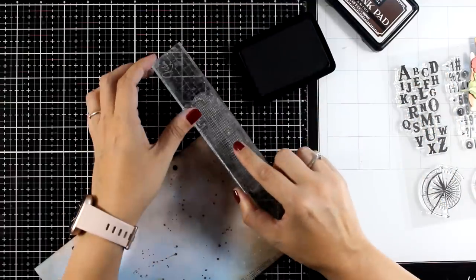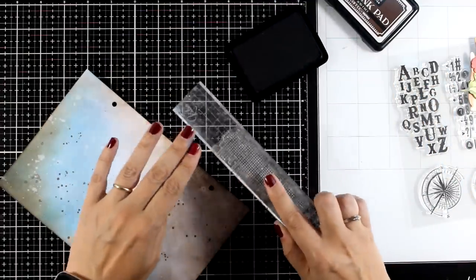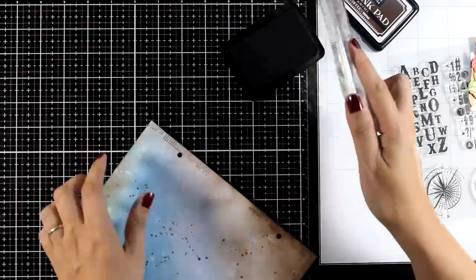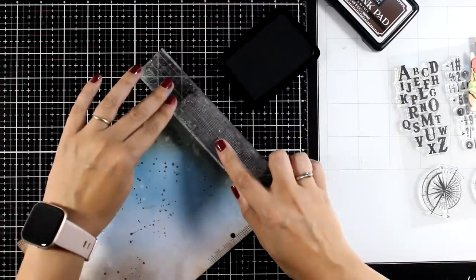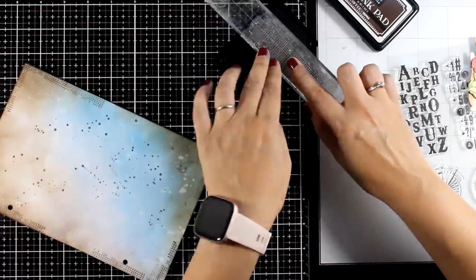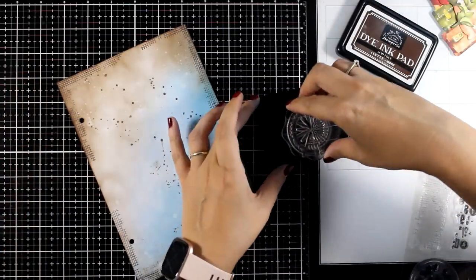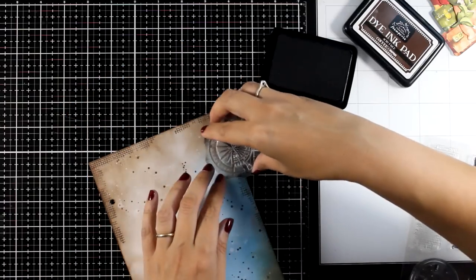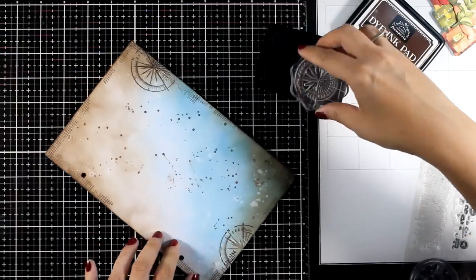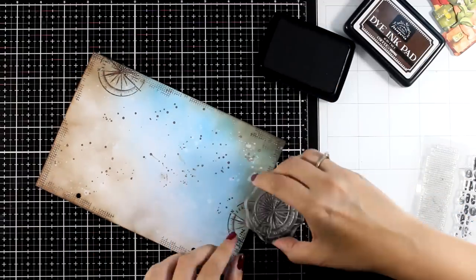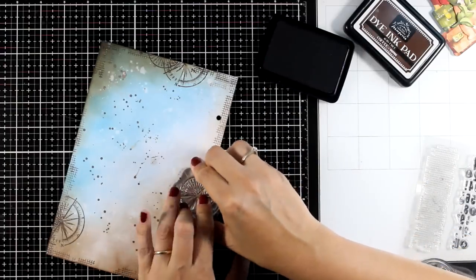For stamping the border I went with coffee dye ink but you can definitely use the black one for a more vibrant border. Also notice that I'm not trying to make this perfect. I deliberately leave areas without stamping at the border just to make it look more interesting. I continue with more stamping to add even more visual texture on my background. This time I went with a compass again from the same stamp set, numbers and alphabets. I'm going to stamp that in a kind of a visual triangle rotating my stamp every time so that it doesn't look identical.